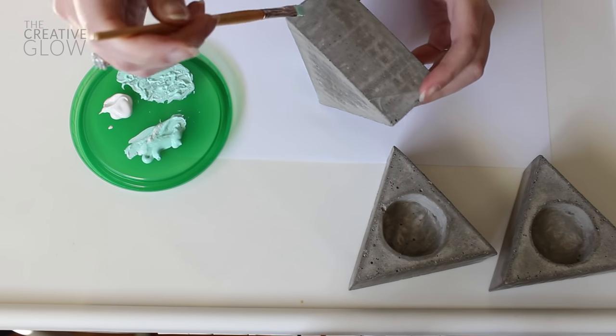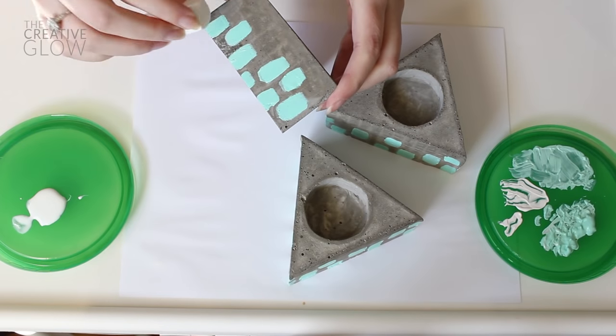Here I'm just using some Martha Stewart multi-surface acrylic craft paint and I believe this is the color surf mixed with a little bit of white. And I'm just randomly painting brush strokes on all sides of my candle holders. And then I'm going to go in around these strokes of paint and glue on some gold leaf.